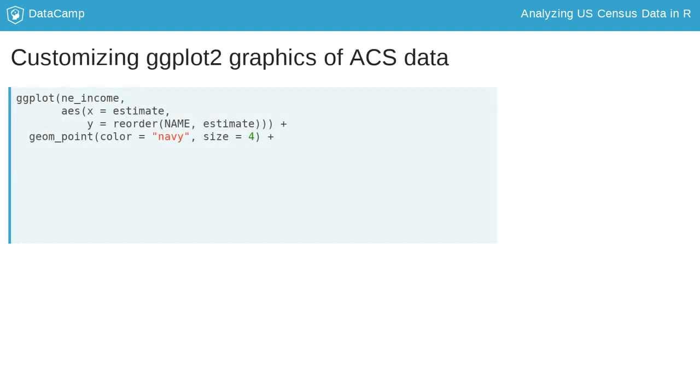The ggplot2 code, shown here, modifies the plot we already created to make it more legible. Changes in the ggplot and geom point functions are evident. We're using the reorder function to order our state dots by their ACS estimates in the chart, and we're changing the color and size of the dots in geom point to help with visibility.